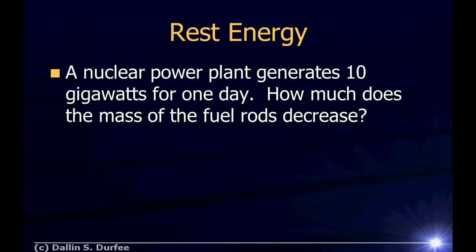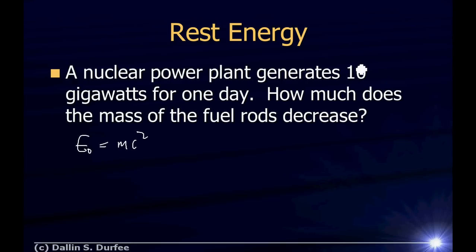Moving on: a nuclear power plant generates 10 gigawatts for one day. How much does the mass of the fuel rods decrease? As these nuclear reactions occur, energy is released. Losing energy from the fuel means making the fuel lighter, because the rest energy E₀ = mc². Since we're not given efficiency details, we assume all 10 gigawatts comes out of the fuel rods.